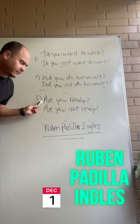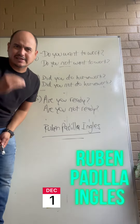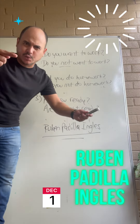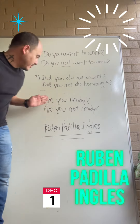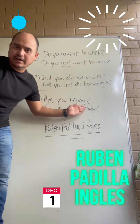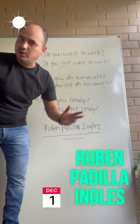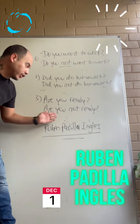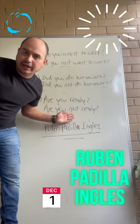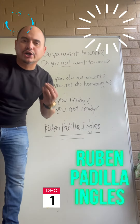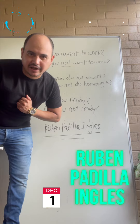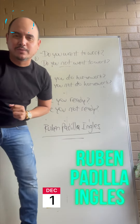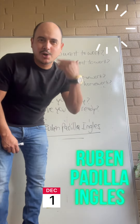Okay, let's see question number three — simple present, verb to be, presente simple, el verbo to be. Cómo preguntas a alguien 'estás listo'? Are you ready? Ahora, cómo harías la pregunta 'no estás listo'? Are you not ready?